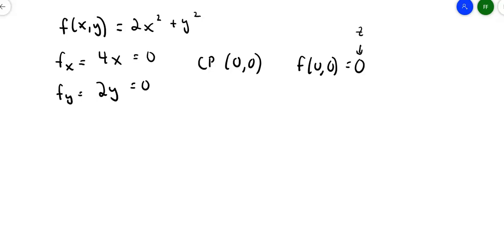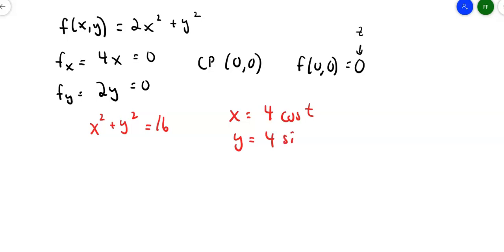Next, we define the circle parametrically. If x² + y² = 16, this is a circle of radius 4 centered at the origin. I can set x = 4cos(t) and y = 4sin(t). If you don't believe it, substitute back and you'll get 16cos²t + 16sin²t = 16, which checks out.